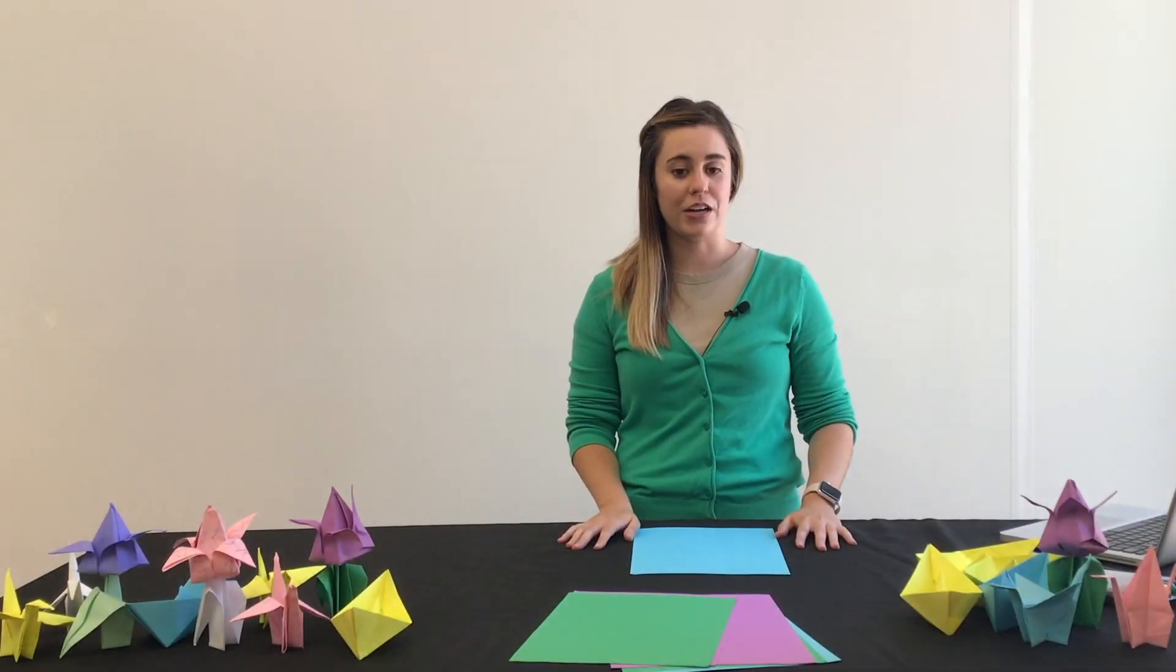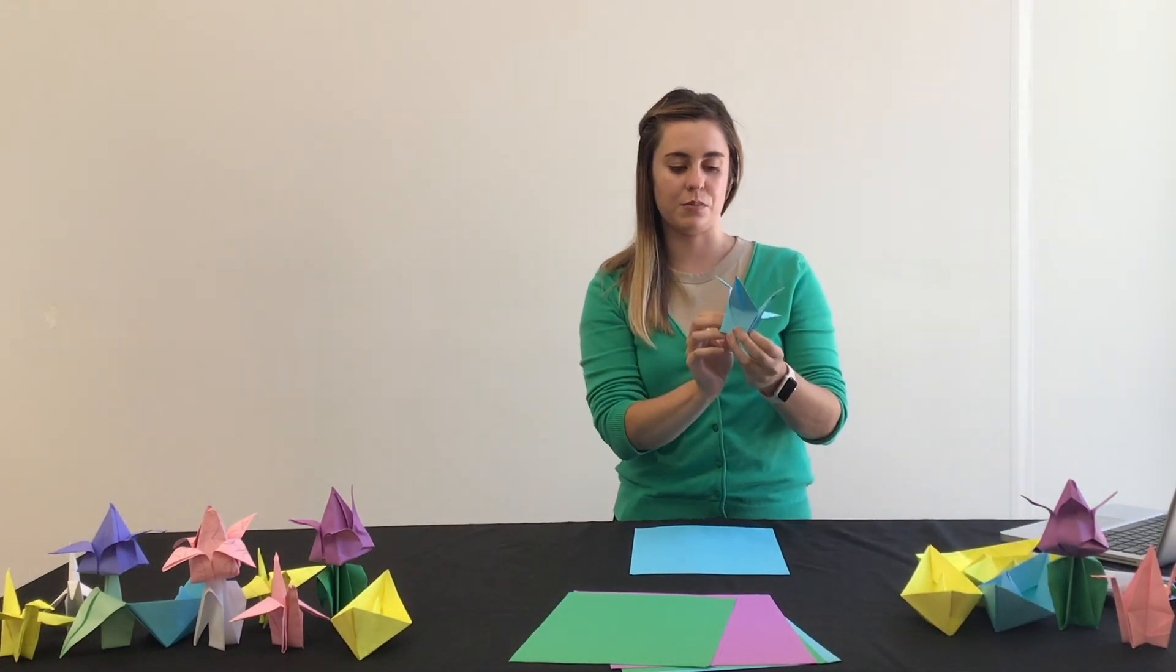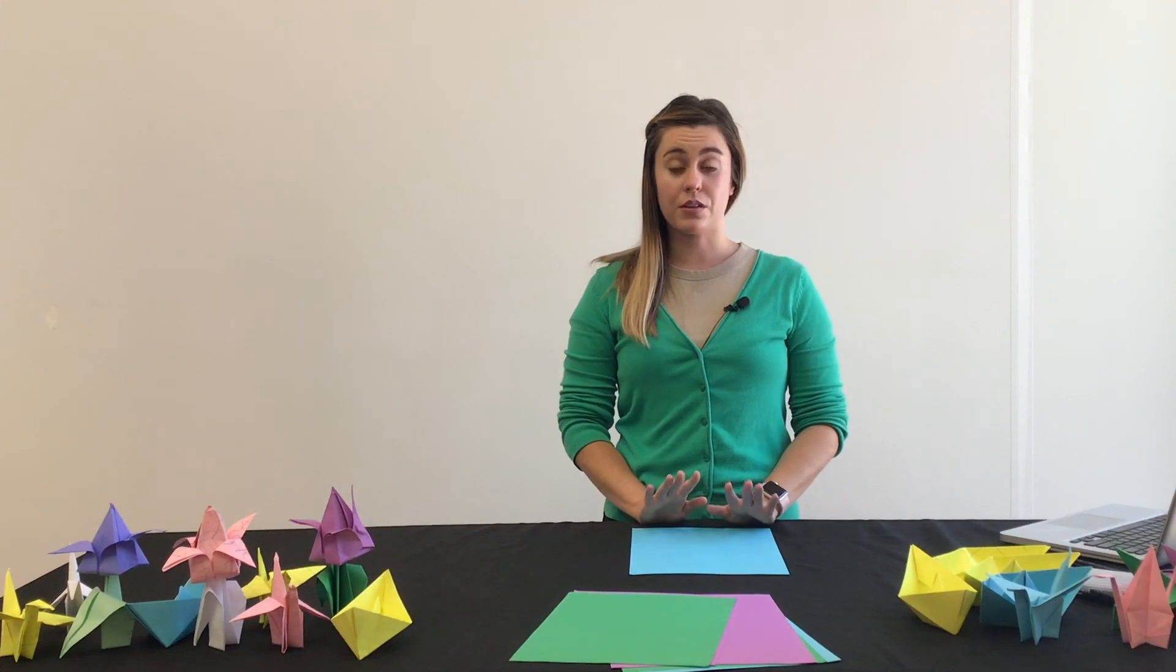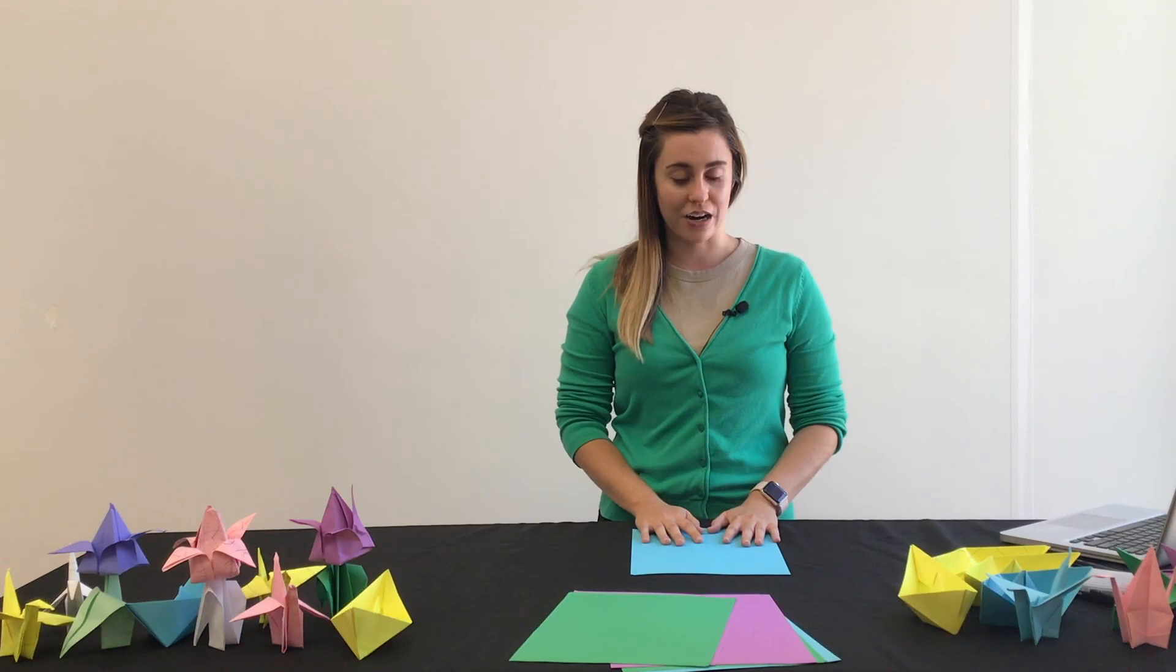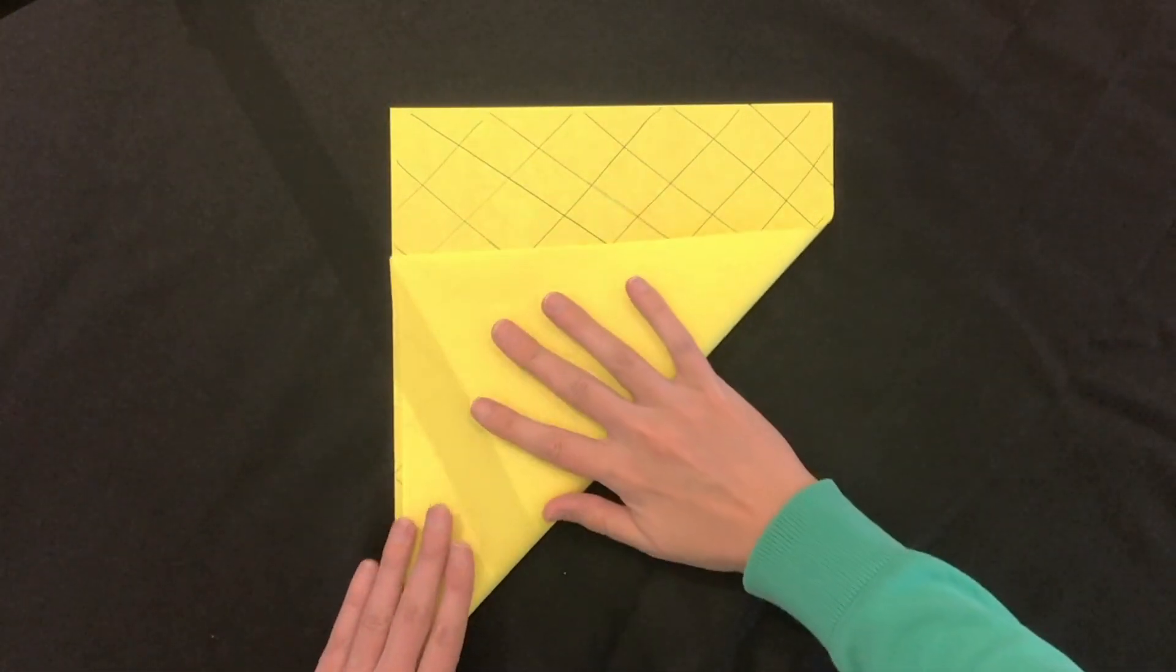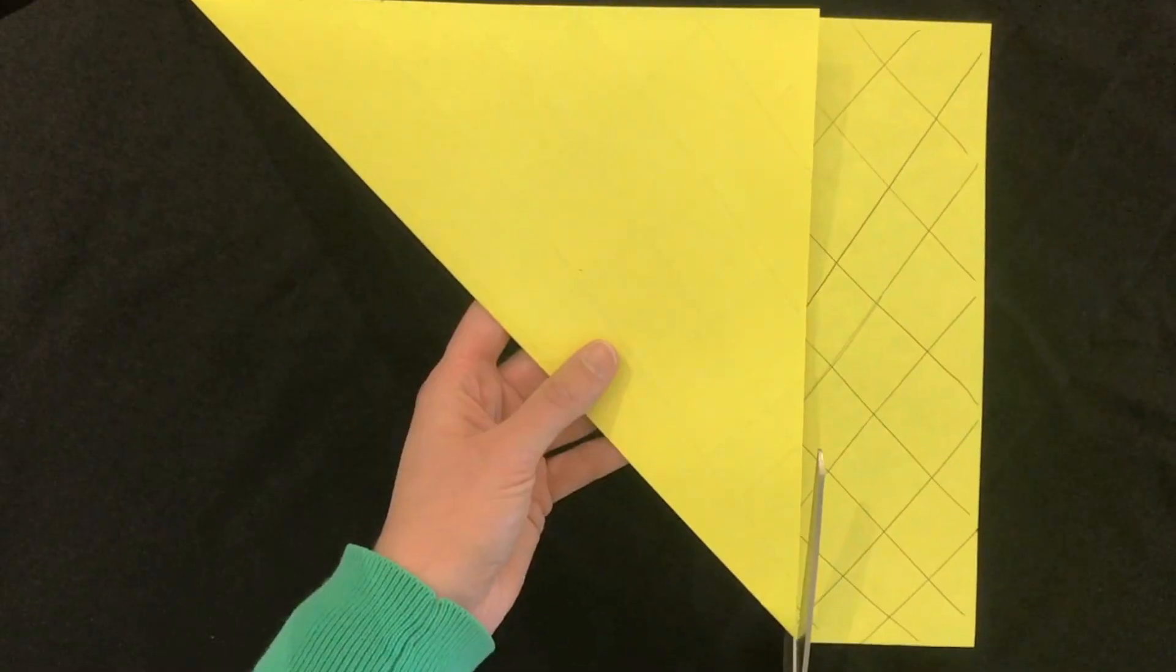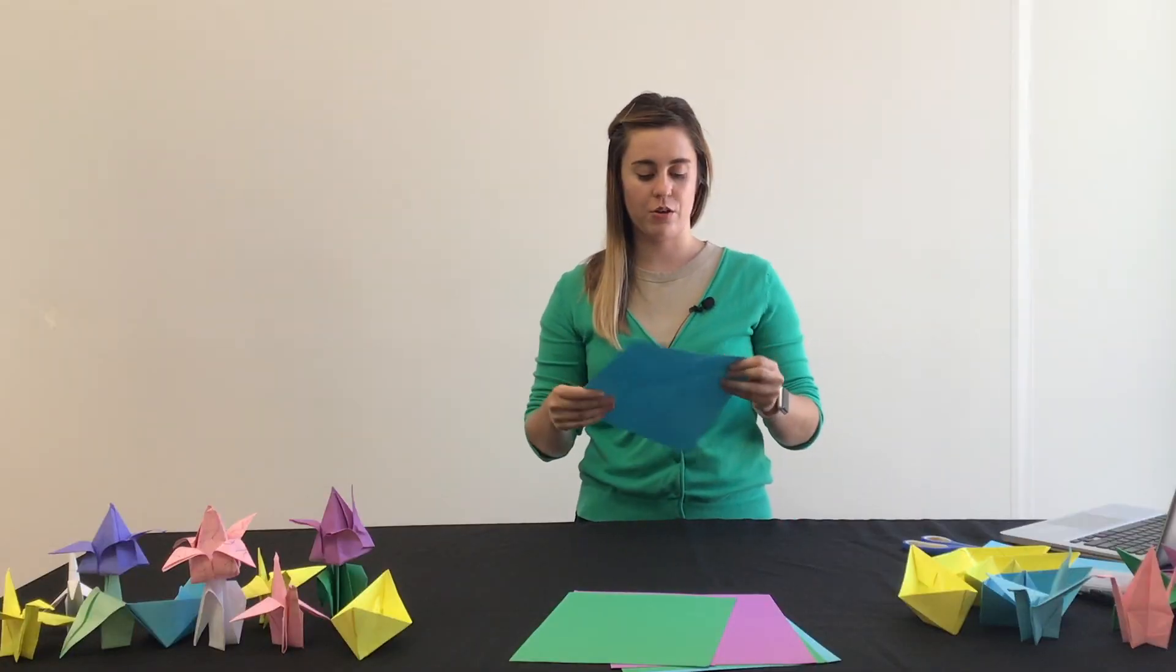So now we're going to try an origami crane. As you can see we have some here. Here's a blue one right here. So this one's a little bit trickier than the boat but it's a really fun one to do. But the first thing you'll need to do is cut your paper into a square. So it's very simple. You'll just want to take one corner and fold it to the left to the other side. There's going to be a little extra space here and you'll just need to cut this off. And now you have a square.